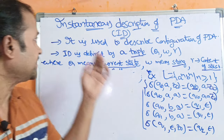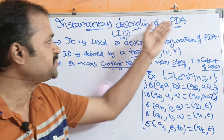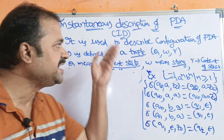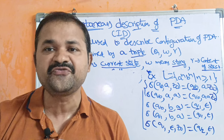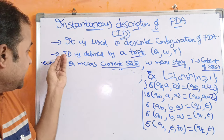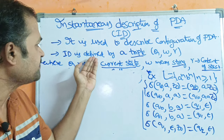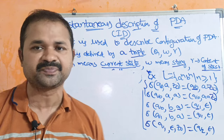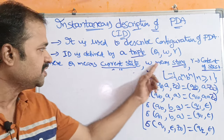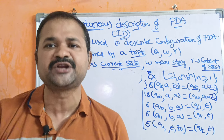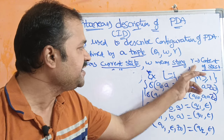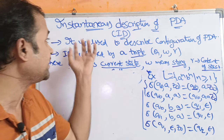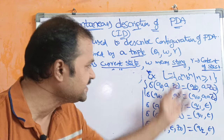Let us discuss about instantaneous description of PDA. In short, we can call it as ID. It is mainly useful in order to describe the configuration of a PDA. Instantaneous description is mainly defined by a triple (Q, W, γ), where Q represents the current state, W represents the input string to be processed, and γ represents the content of the stack. Now let us discuss about instantaneous description by taking an example.